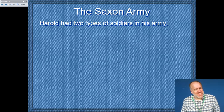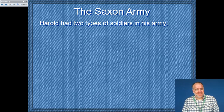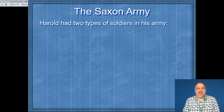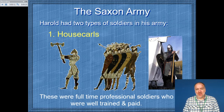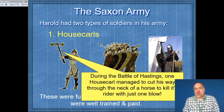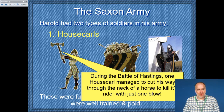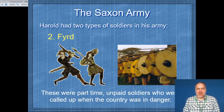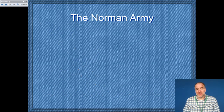Harold Godwinson had two types of soldiers in his Saxon army. He had the housecarls, who were well-trained professional soldiers — they were skillful axemen. In fact, at one point during the battle one of the housecarls managed to strike the head off a horse in one fell swoop. He also had the fyrd, who were effectively peasant farmers called up to fight for him in times of danger. They weren't trained at all.